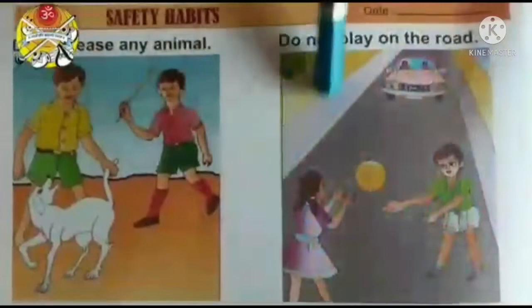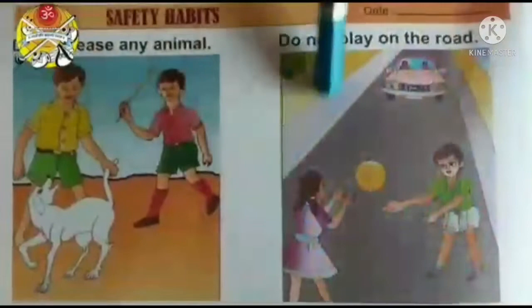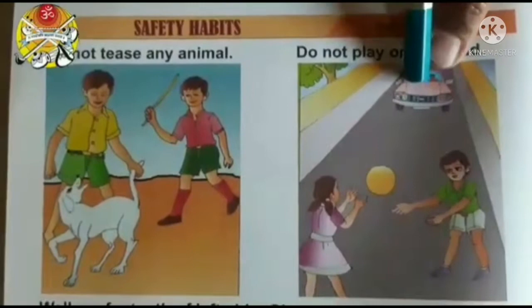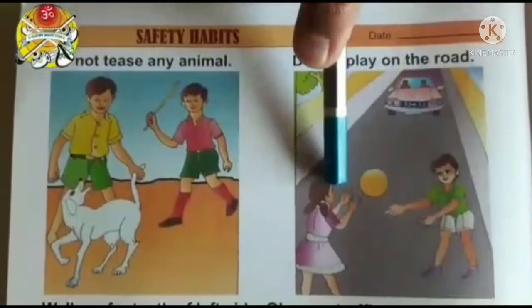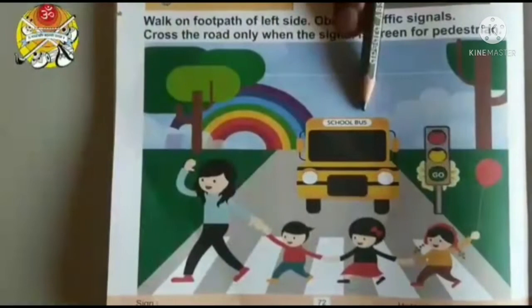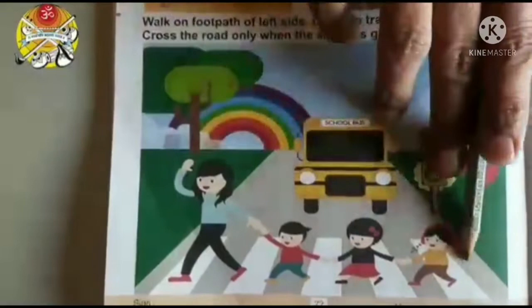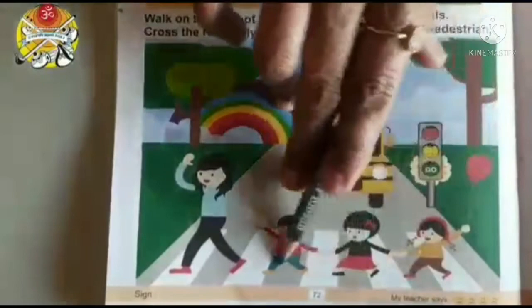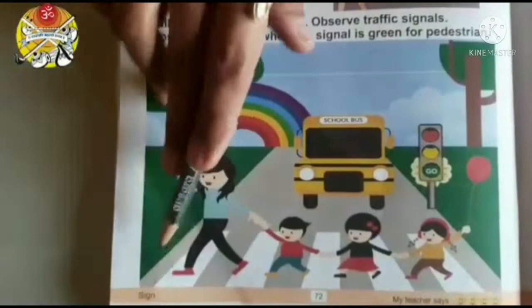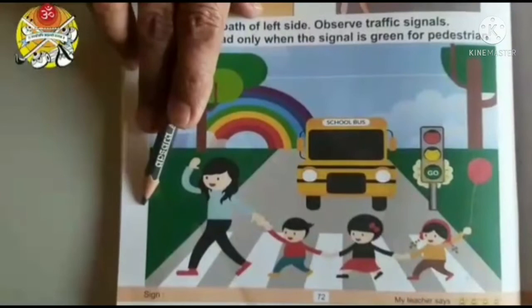Now the next one. See, the children are playing on the road and a car is coming. If the car comes near these children, they may get hurt. So what is the safety rule? Do not play on the road. We should never play on the road. Now look at the next picture — a few kids are holding the hand of the mother and crossing the road at the zebra crossing, which has white and black color stripes.